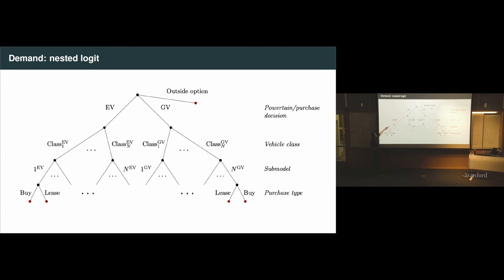We're going to have a flexible substitution pattern between EVs and gas vehicles that is empirically calibrated using the second choice data I mentioned before. Then within electric vehicles and gas vehicles, you choose the class of vehicle. Do you want a sedan or a pickup or an SUV? The substitution patterns between these things are also determined by the second choice data. Then within the class, I can choose to buy which specific model I want, the Rivian, the Tesla, et cetera. And then within that, I can buy or lease.